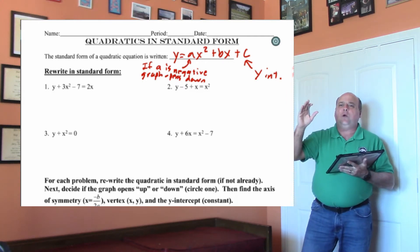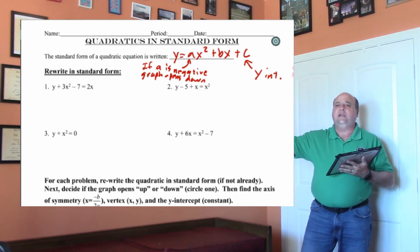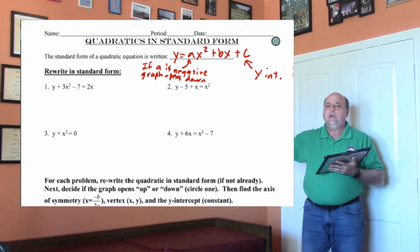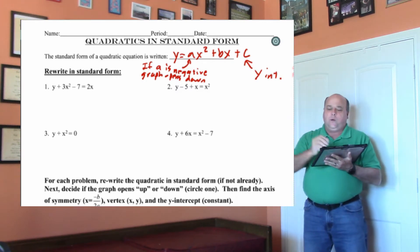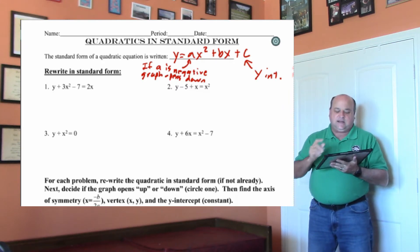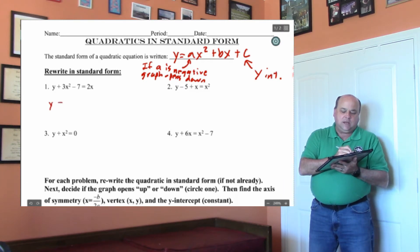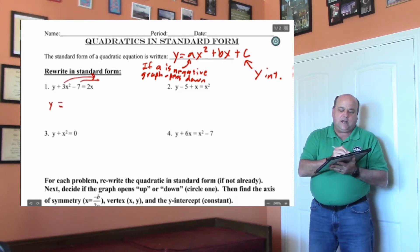In the first four problems, all we're going to do is make it y equals ax squared plus bx plus c. We want the y first, the x squared second, the bx third, and the c last. We want the y first, equals the x squared has to go to the right, and the 7 has to go to the right.